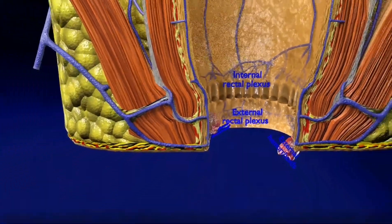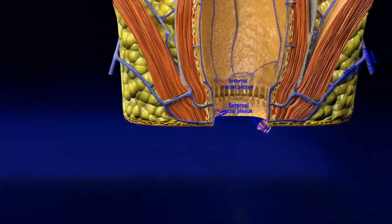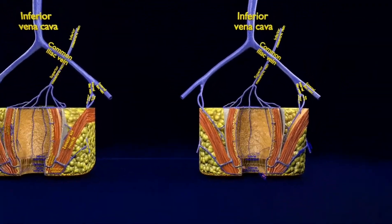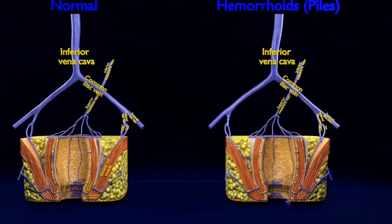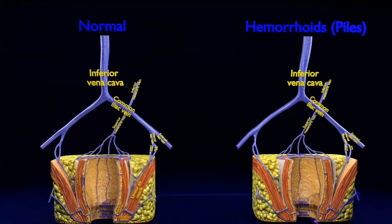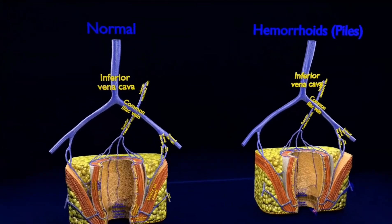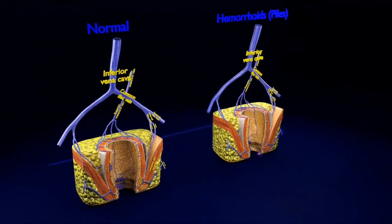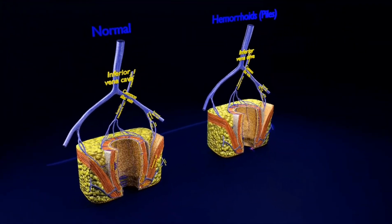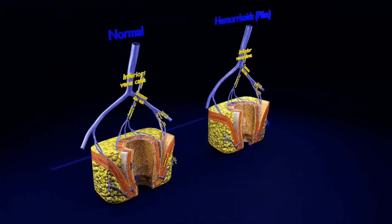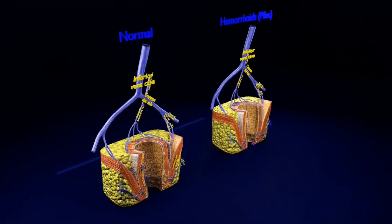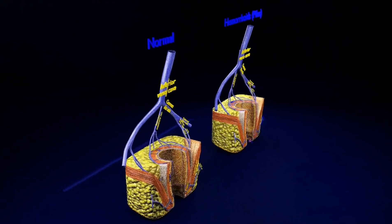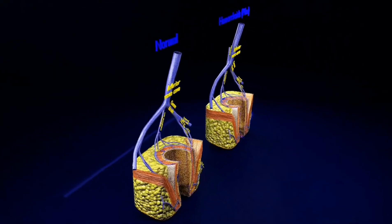Internal hemorrhoids drain through the superior rectal vein into the portal system. External hemorrhoids drain through the inferior rectal vein into the inferior vena cava. Rich anastomoses exist between these two and the middle rectal vein, connecting the portal and the systemic circulations.